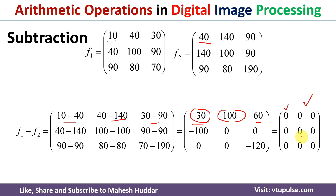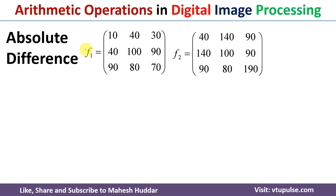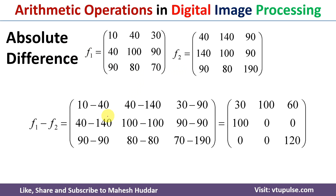After performing all these conversions, we get the subtracted image. The third arithmetic operation is absolute difference between the two image fragments. The absolute difference of F1 minus F2 is computed pixel-wise: |10 - 40| = 30, |40 - 140| = 100, |30 - 90| = 60, and so on, giving us the final absolute difference image.